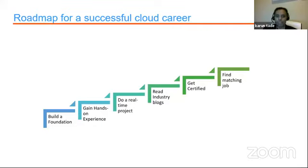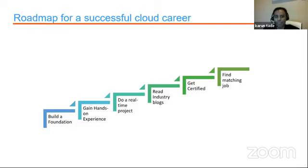The next important part is reading industry blogs. All these companies come up with blogs, and Bytexcel will come up with a newsletter. Trying to get expert advice on how the cloud is changing every day and what new emerging technologies are being supported by cloud — we need that understanding, and this can be done only by reading industry blogs. The next component is obviously getting a certification, which is a kind of validation. Certificates are offered by all these companies — AWS, Azure/Microsoft, Google, and Oracle.